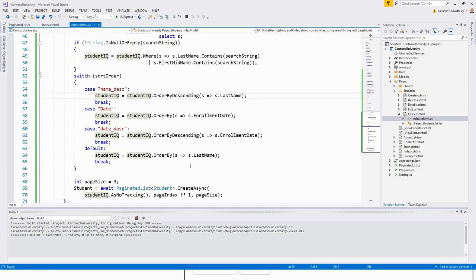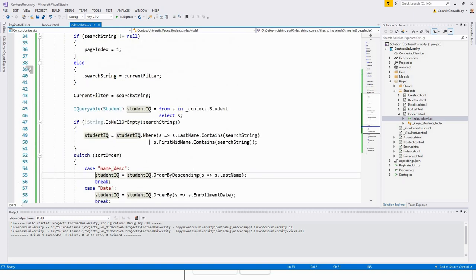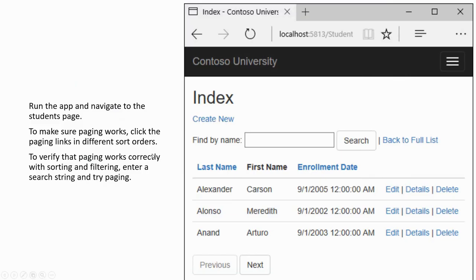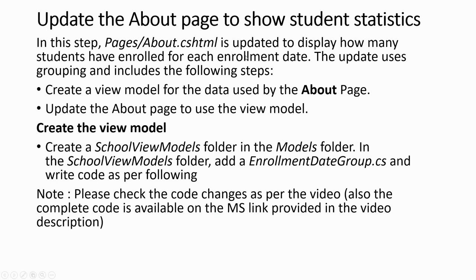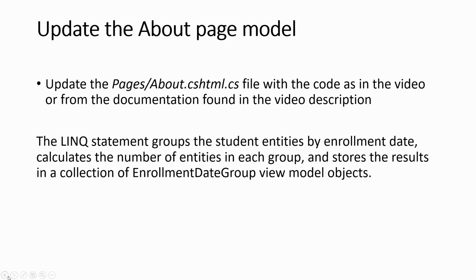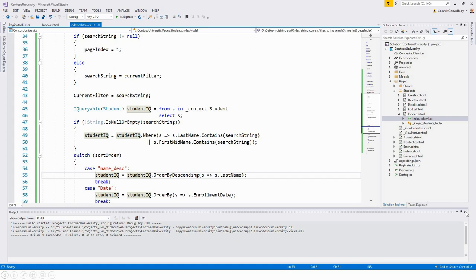The final portion is updating the About page to show student statistics. Pages/About.cshtml is updated to display how many students enrolled for each enrollment date. The update uses grouping and includes: creating a view model for the data used by the About page, updating the About page to use the view model, and creating a SchoolViewModels folder in the Models folder. Add an EnrollmentDateGroup.cs class and write the required code.